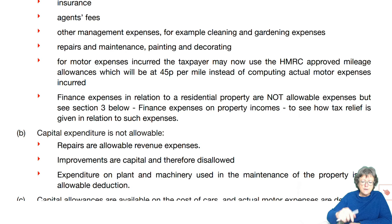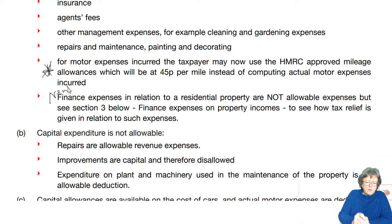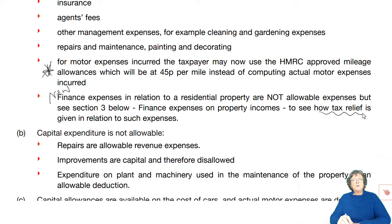Motor expenses you'll come across later in the employment chapter. Finance expenses related to a residential property are not an allowable expense. You get tax relief for it, but it's not a direct expense. So if you see loan interest to buy a property, or loan interest to improve a property, that's not an expense — you have to deal with it separately.